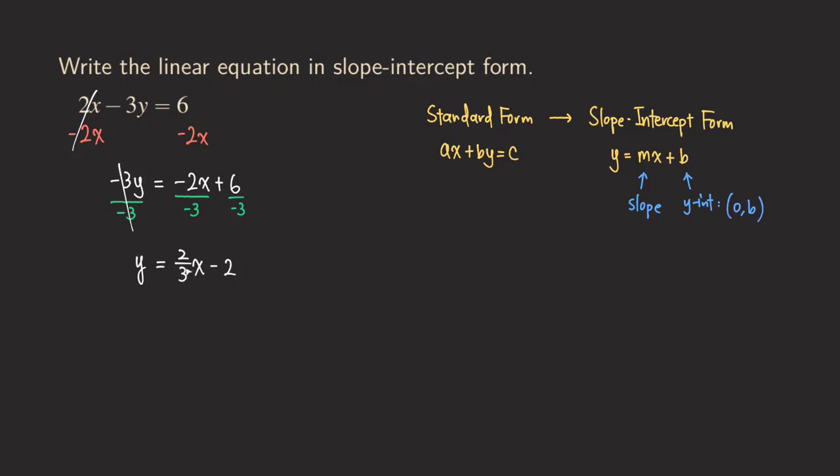Because as you can see here, there was some number times X plus some other number, which is the same form as this one. And so as you can see from here, that the M, the slope is what is actually just 2 over 3. And then what about the Y intercept? The Y intercept, as you can see from here, it's not just 2. It's actually negative 2. So the point would be 0 and then negative 2.